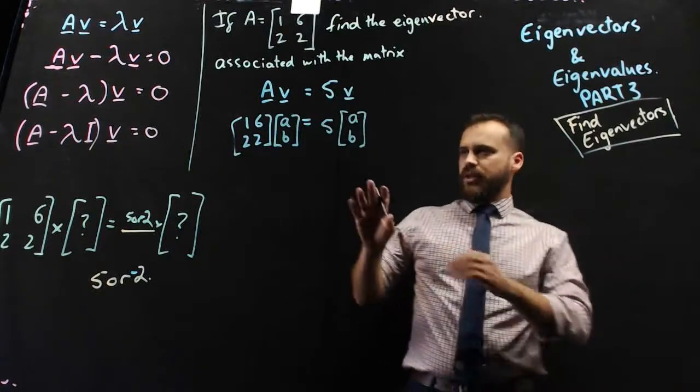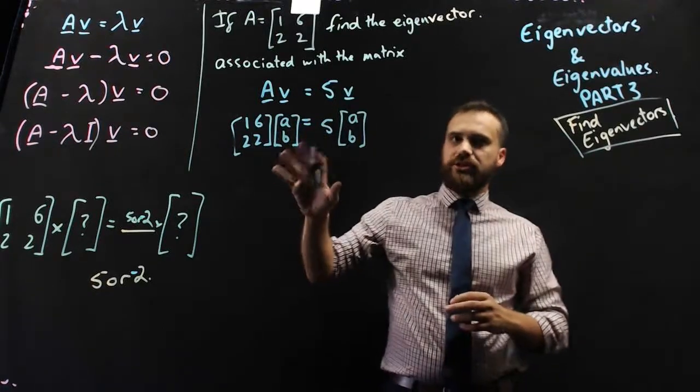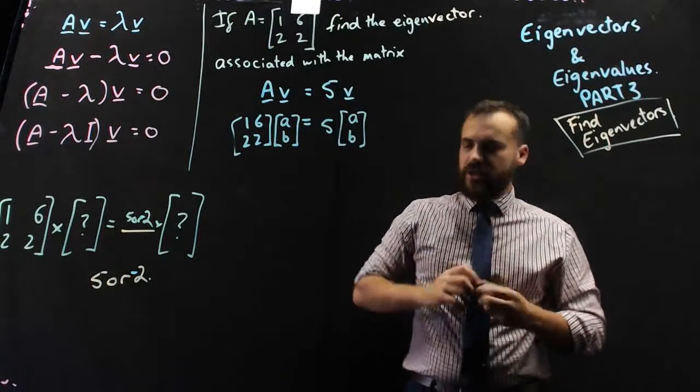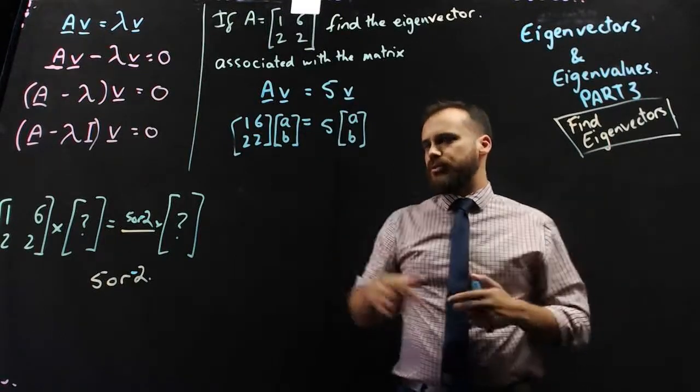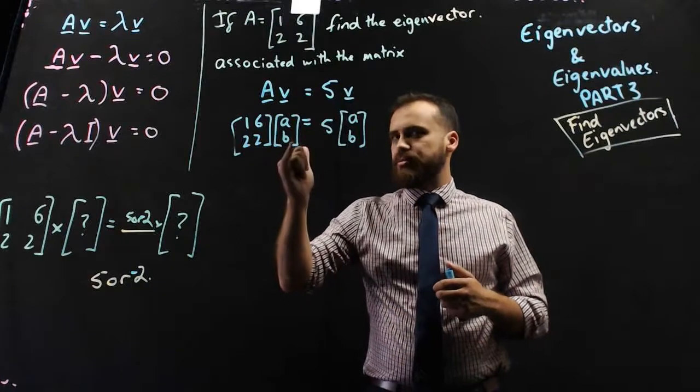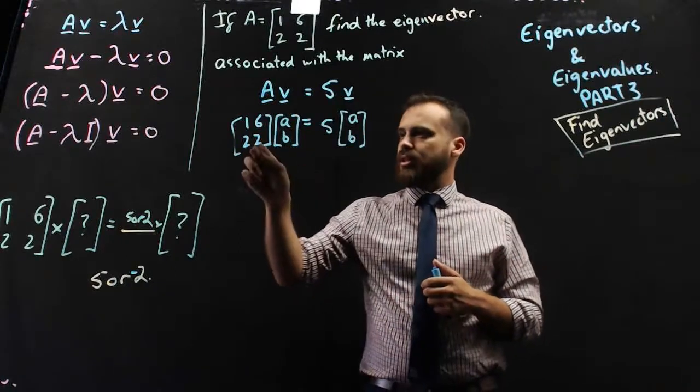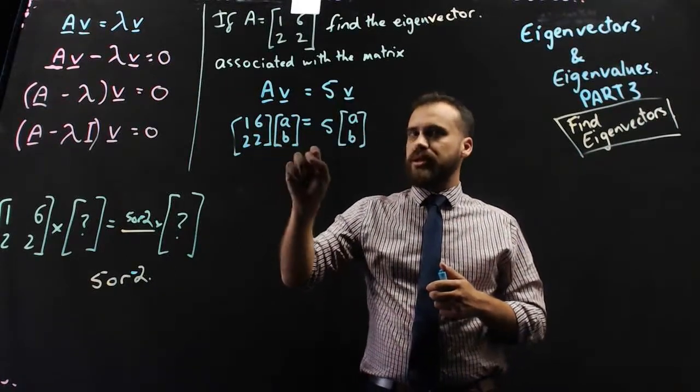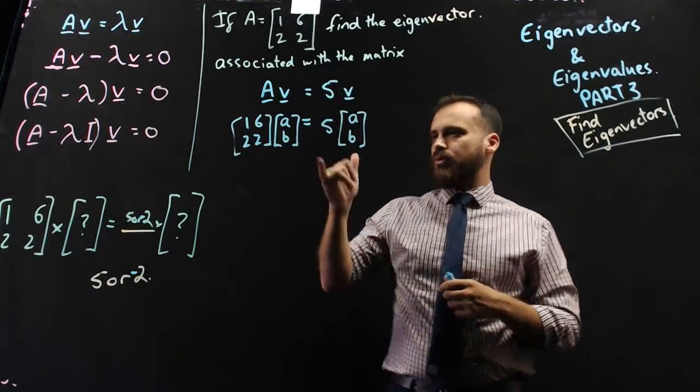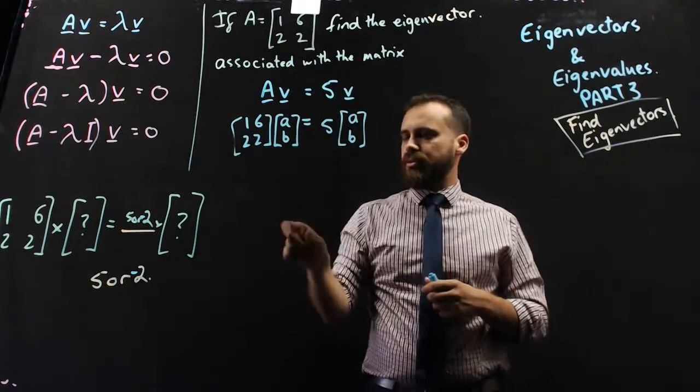All right, so if I perform some matrix multiplication on the left here, just think about what the matrix multiplication would give you. It would give you 1 times a plus 6 times b, that's our first element, and then it would give 2 times a and 2 times b, and that would be our second element. So it's going to give us a 1 by 2 matrix, a column matrix.